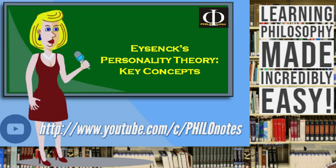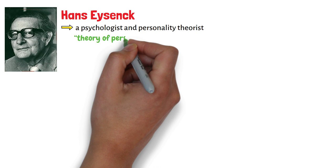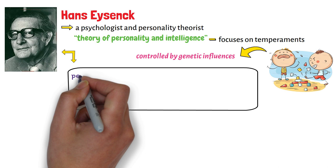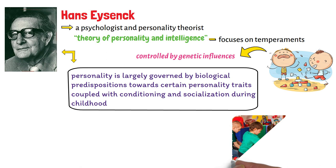Eysenck's personality theory: key concepts. Hans Eysenck was a psychologist and personality theorist who became famous for his theory of personality and intelligence that focuses on temperaments, which he believed were controlled by genetic influences. Eysenck believed that personality is largely governed by biological predispositions towards certain personality traits, coupled with conditioning and socialization during childhood.